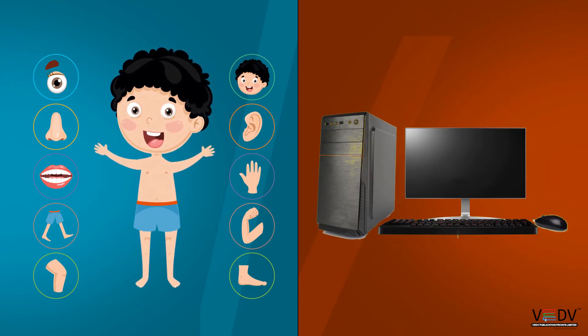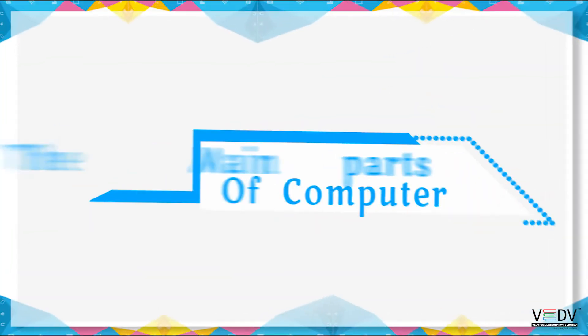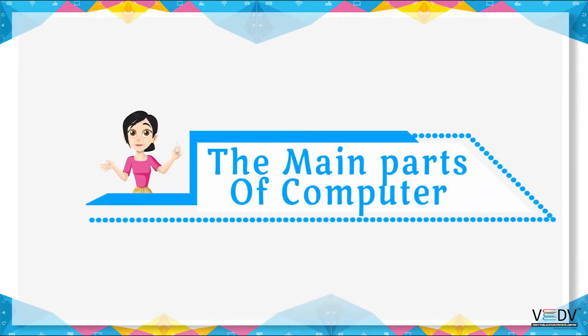The main parts of the computer are: Monitor, CPU, Keyboard, and Mouse.